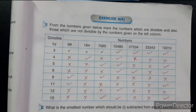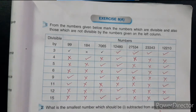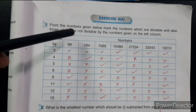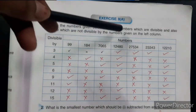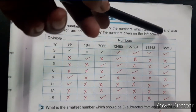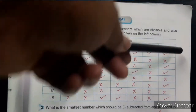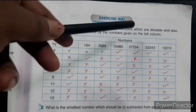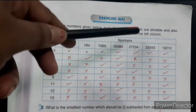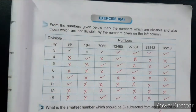Welcome, Class 5. In this video, we will discuss Exercise 8a of Precise Mathematics. The first sum: from the numbers given below, mark the numbers which are divisible and also those which are not divisible by the numbers given in the left column.